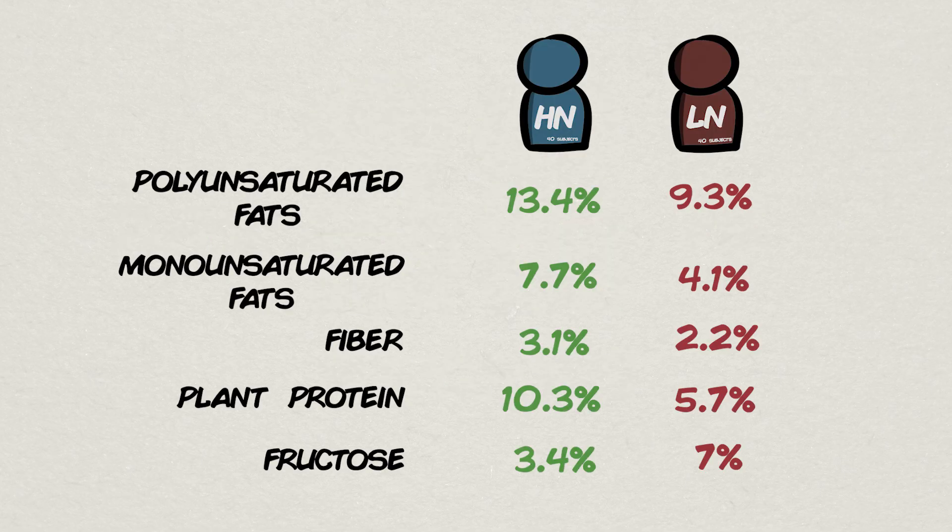As you can see, the nutrients considered healthy nutrients, unsaturated fats, fiber, protein, were allocated more in the high-quality group and the simple sugar fructose was higher in the low-quality group. Very distinct differences in nutrient composition.